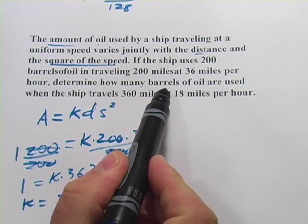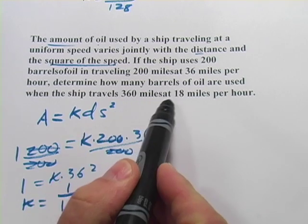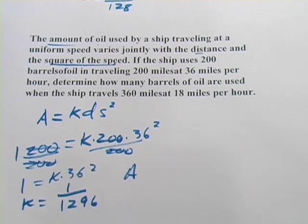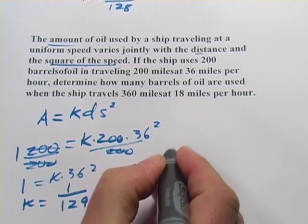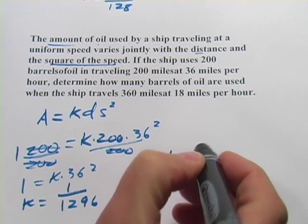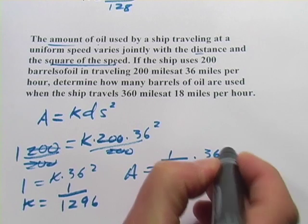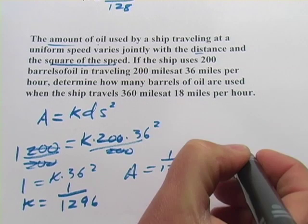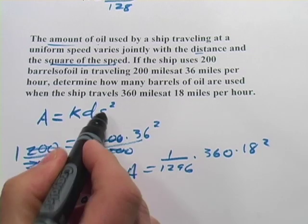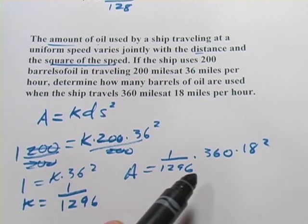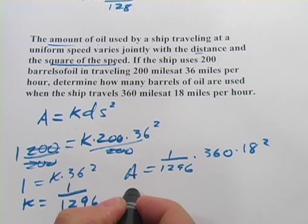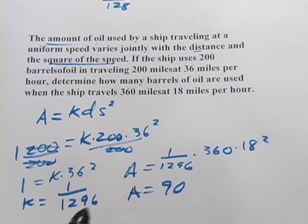And now it says, determine how many barrels of oil are used when the ship travels 360 miles at 18 miles per hour. So the amount is what we're looking for. And we have our k. It's 1 over 1296. And we have our distance, 360 miles. And our speed is 18, and remember that has to be squared, because that's how the formula works here. So we just do the math there. I think if you chug that all the way through, you get A equals 90.